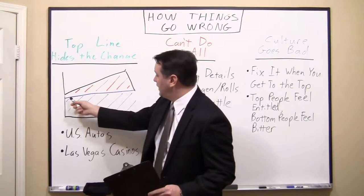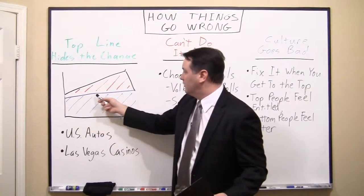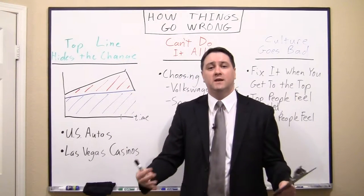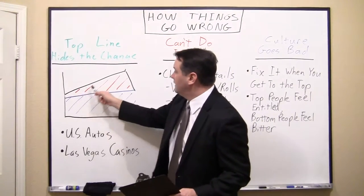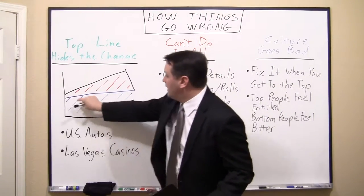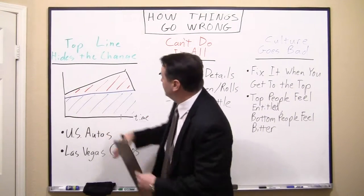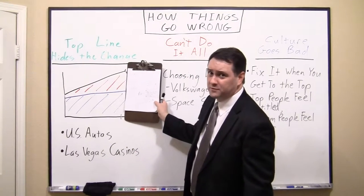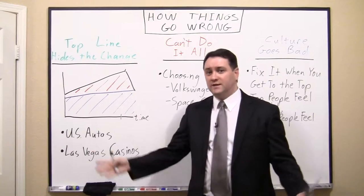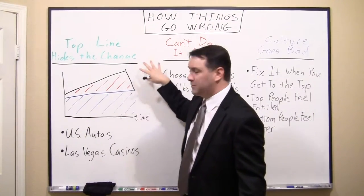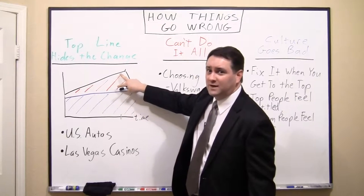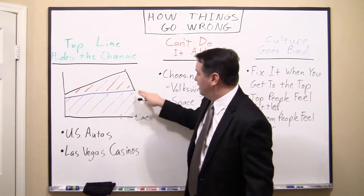So this blue line represents the people who are buying cars because they needed them — they were worn out. And the red line is the new people who are buying because they want the features; they're upgrading. And as you can see, if you only looked at the top line — which I think was the mistake the industry made — they saw an increase and thought it was the same sort of blue segment all along. When in reality, it was the growth of a much more volatile segment that caused the collapse.